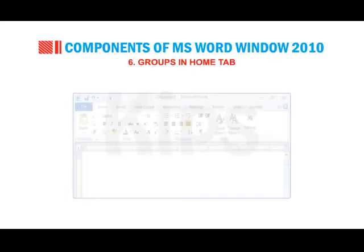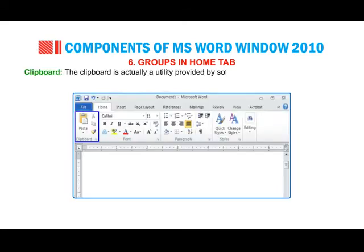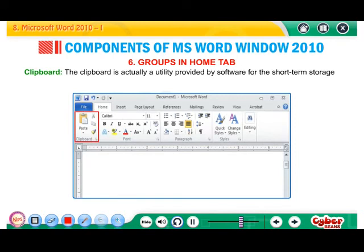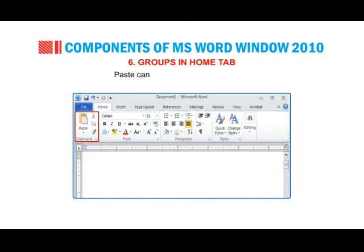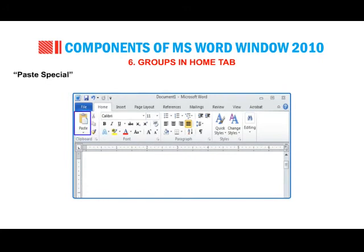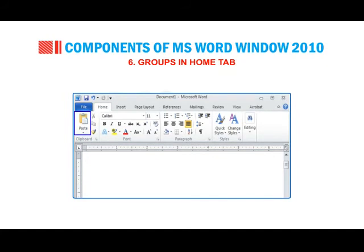Groups in Home Tab — Clipboard: the Clipboard is a utility provided by software for the short-term storage and transfer of data between applications and documents using cut, copy and paste options. Paste can be used to copy hyperlinks. Paste Special provides a variety of file format options to paste text and objects in a document. You can cut or copy the selected document text to the clipboard.